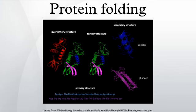Experiments beginning in the 1980s indicate the codon for an amino acid can also influence protein structure. The correct three-dimensional structure is essential to function, although some parts of functional proteins may remain unfolded, so that protein dynamics is important.